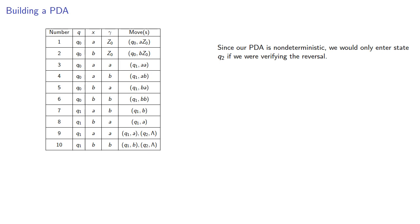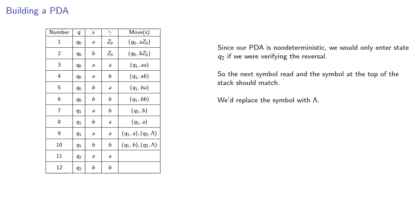Since our pushdown automaton is non-deterministic, we would only enter state q2 if we were verifying the reversal. The next symbol read and the symbol at the top of the stack should match, and we'd replace that symbol with the empty string and switch to state q3.